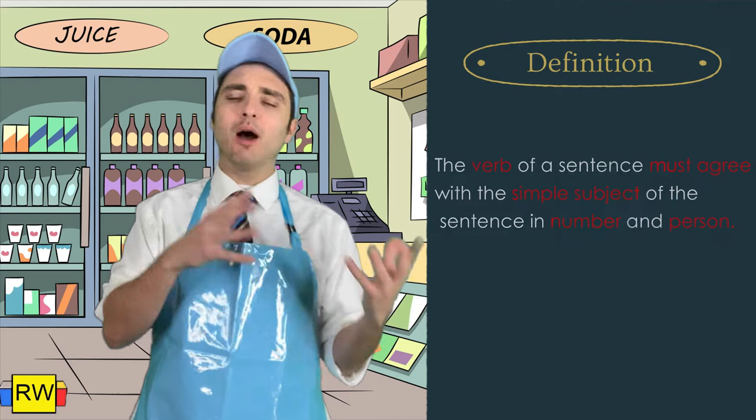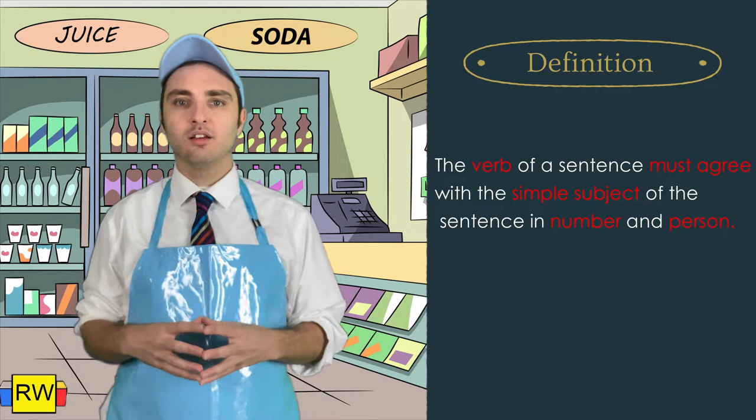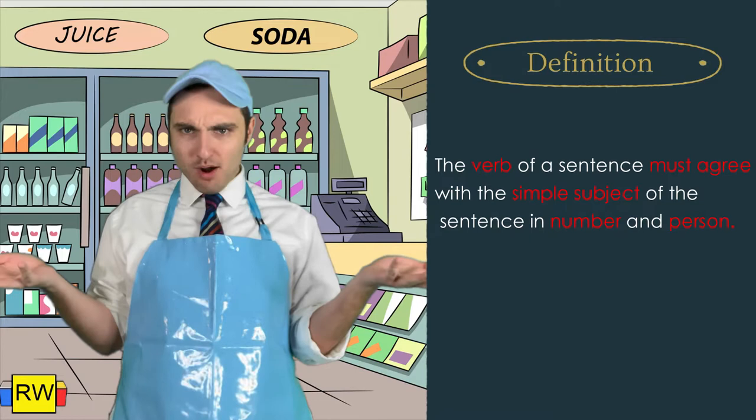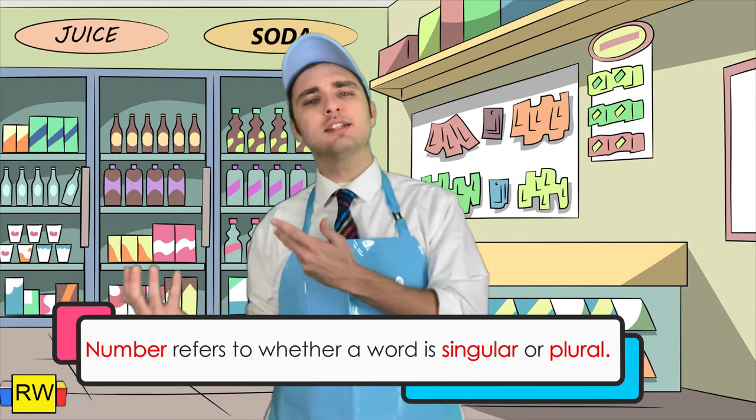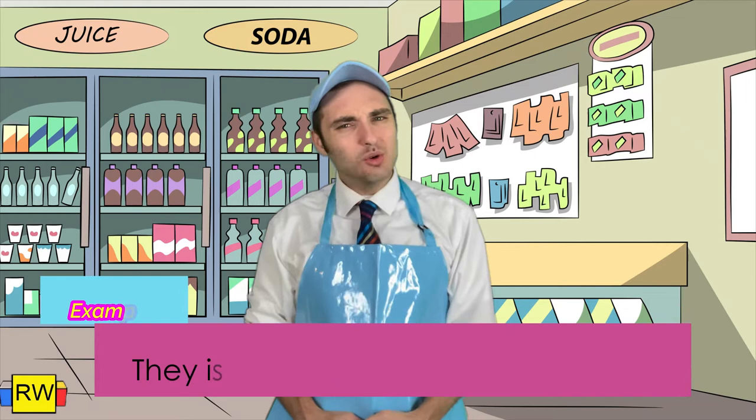When it comes to subject-verb agreement, the verb of a sentence must agree with the simple subject in number and person. When it comes to making your subjects and verbs agree in terms of number, number refers to whether a word is singular or plural. For example, let's take a look at this sentence: They is playing Dungeons and Dragons. Does this sound right to you? They is playing Dungeons and Dragons.